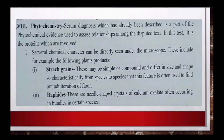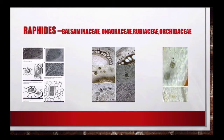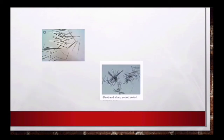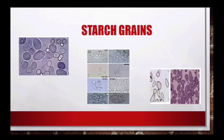Raphides यह needle-shaped crystals होते हैं जो कि calcium oxalate के होते हैं। कुछ species में यह groups में पाए जाते हैं। यहाँ आप देख रहे हैं different shape के raphides - कुछ needle like हैं। यह raphides different families में पाए जाते हैं जैसे Balsaminaceae, Onagraceae, Rubiaceae, Orchidaceae। यह cubical भी हो सकते हैं, prism like भी हो सकते हैं, cylindrical भी हो सकते हैं। Potato में आप देख सकते हैं clear-cut starch grains जिनमें concentric rings जैसे दिखाई देती हैं, और iodine के साथ यह blue color देते हैं।